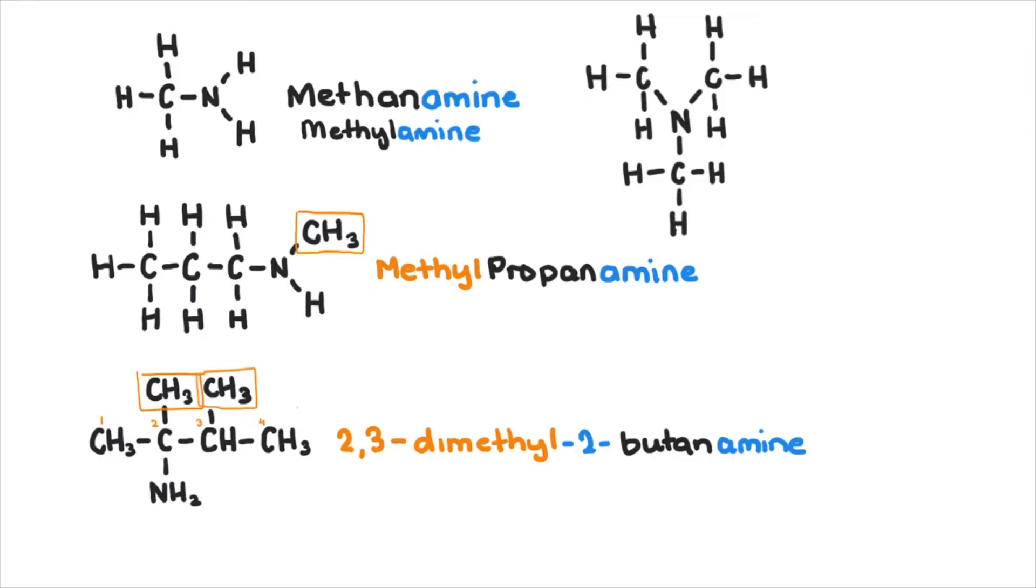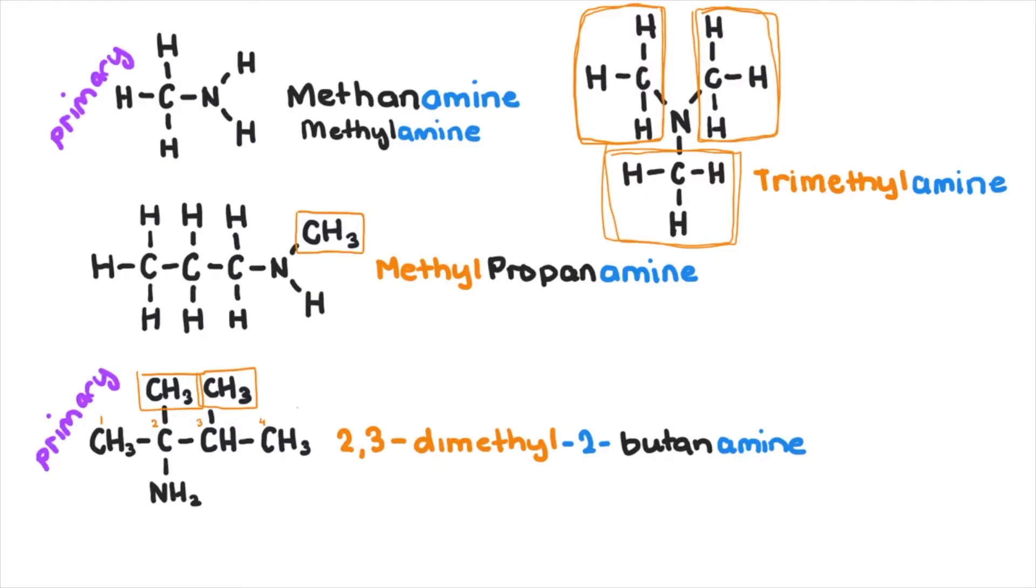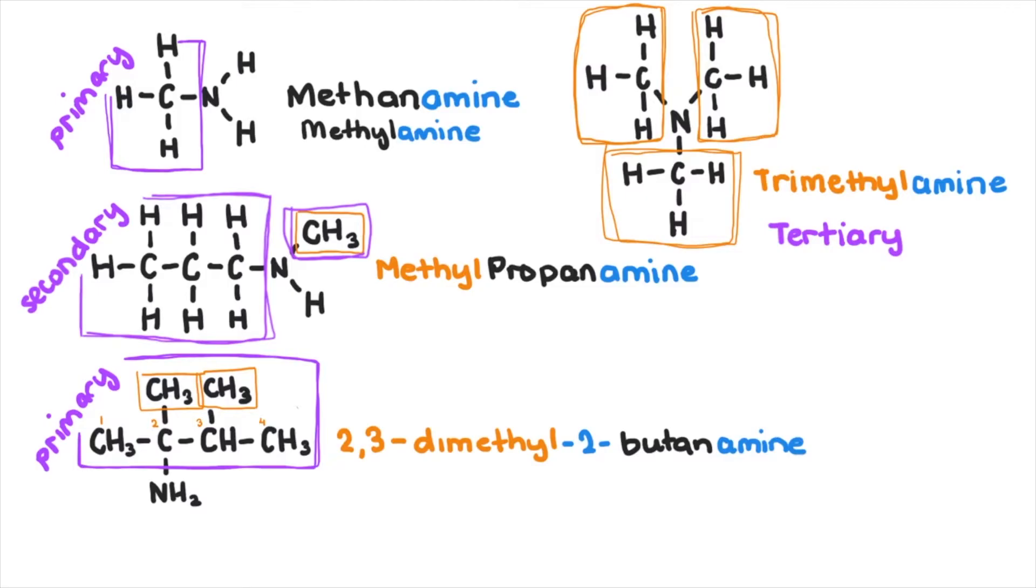Okay, last one. Well, it looks like there are three methyl groups attached to the nitrogen. This is called trimethylamine. There's no real parent chain here. Amines can be further classified as primary, secondary or tertiary just like the alcohols. These are known as primary amines as they only have one alkyl group attached to the nitrogen. This one is a secondary amine as it has two alkyl groups attached to the nitrogen. And this is known as a tertiary amine as it has three alkyl groups attached to the nitrogen.